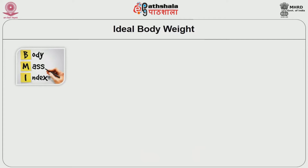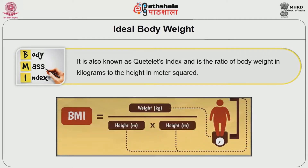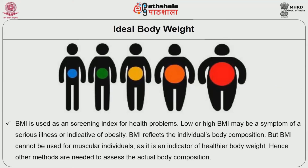The current standard used is Body Mass Index, abbreviated as BMI. Body Mass Index is also known as Quetelet Index and is the ratio of body weight in kilograms to the height in meters squared. BMI is used as a screening index for health problems. Low or high BMI may be a symptom of serious illness or indicative of obesity. BMI reflects the individual's body composition, but BMI cannot be used for muscular individuals as it is only an indicator of healthy body weight. Hence, other methods are needed to assess the actual body composition.